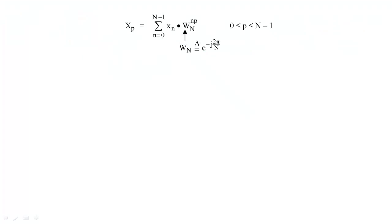When we calculate the DFT, we will multiply every sample by the same exponential term raised to different powers. For the sake of reducing notation, we substitute this exponential with capital W sub capital N.